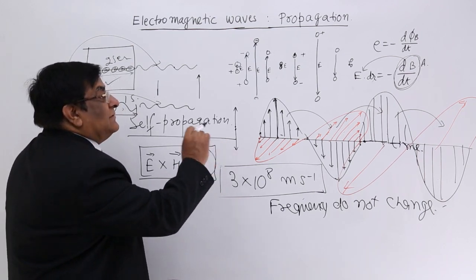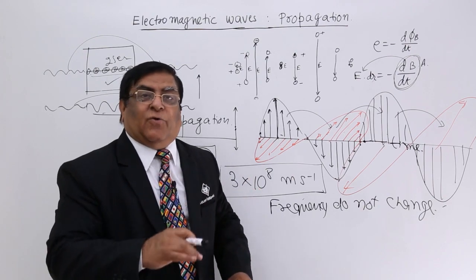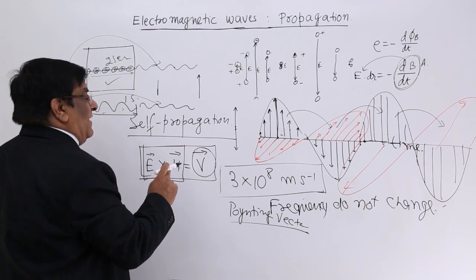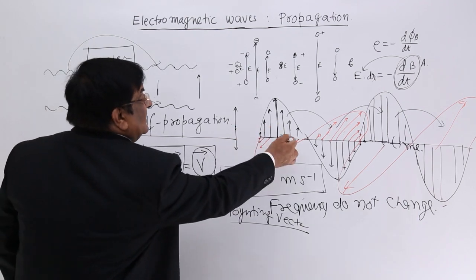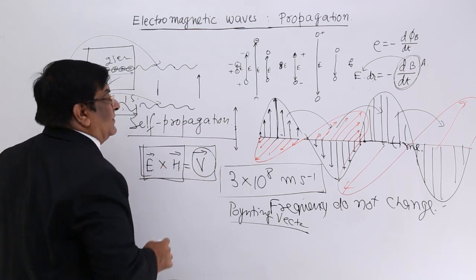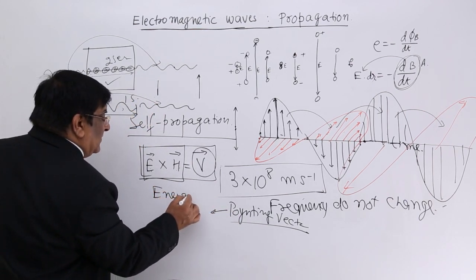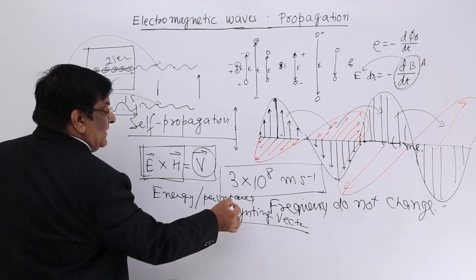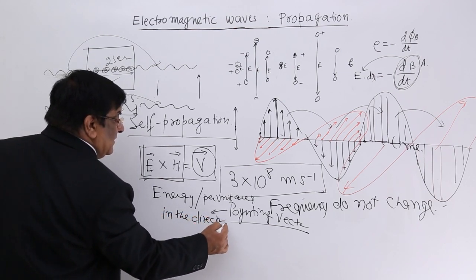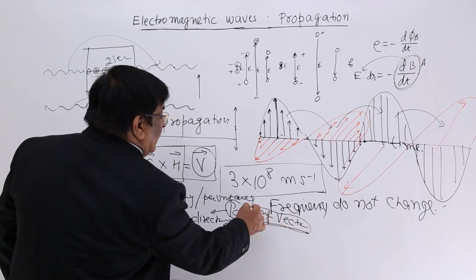The energy that the wave carries per unit volume is given by the Poynting vector, which is E cross H. It is a vector product, so it gives a vector in a direction perpendicular to both E and H. The Poynting vector gives us the energy of the electromagnetic wave per unit area in the direction of E cross H — that means perpendicular to both.